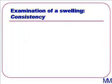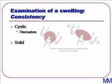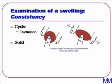We need to decide whether the swelling is cystic or solid. A cystic swelling contains fluid, so if you poke it, it distends in another direction. This is known as fluctuance and is tested with Paget's test, which involves placing a finger either side of the swelling. If the swelling is cystic, pushing it in its centre should displace the two fingers apart.